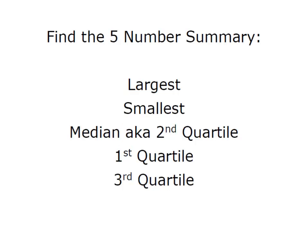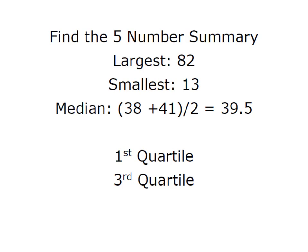The first thing we're going to need to create our box plot is this five number summary and it's simply the largest, the smallest, the median, and then the first and third quartiles. I looked at my data and found that the largest value I had was 82 days, the smallest was 13.